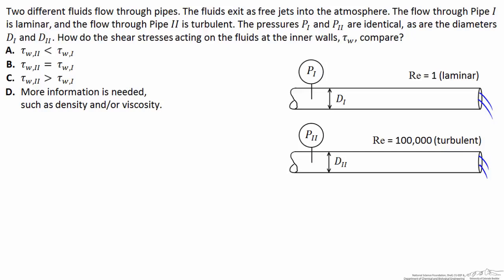However, the Reynolds number in pipe 1 is only 1, indicating laminar flow, and the Reynolds number in pipe 2 is 100,000, indicating that the flow is turbulent. The question is how do the shear stresses acting on the fluids at the pipe walls compare?